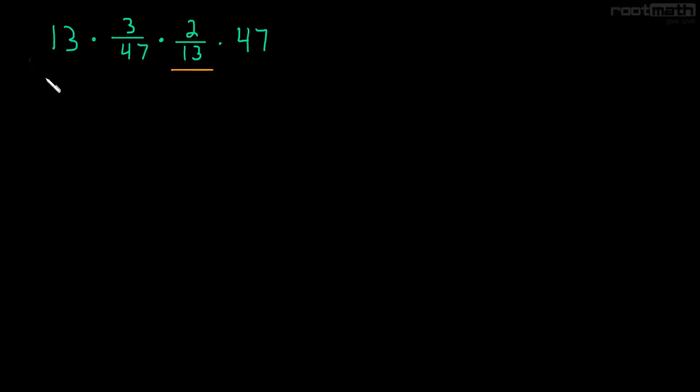Well, it looks like the 13 in the denominator there and the 13 on the left maybe will cancel, and the 47 in the denominator and the 47 on the right might cancel. So, since multiplication is commutative, something we've already learned, we can rearrange this any way we want. So, we'll rearrange it this way. Let's put the 13s together and the 47s together.